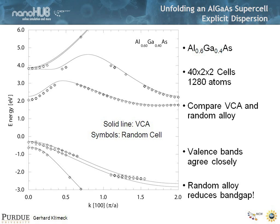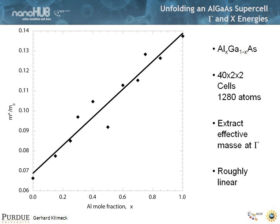Given this methodology, we can actually start to extract effective masses, for example at the gamma point. We can plot those masses from our unit cell calculation, and we roughly see a linear dependence of the effective mass: it starts out at 0.067 as a function of aluminum concentration and goes up linearly. So those results make sense. This is a benchmark to verify that we're doing this correctly.